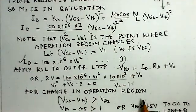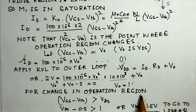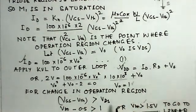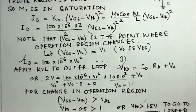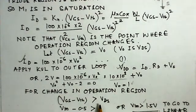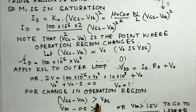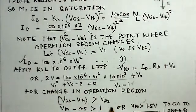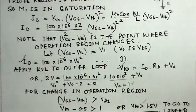For change in operation region, then VGS minus V threshold should be greater than VDS. Because we are going from the saturation to the linear region. So, VGS minus V threshold should be more than VDS.